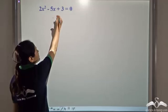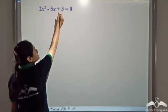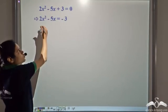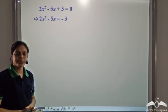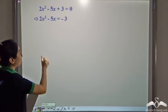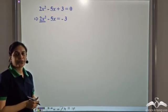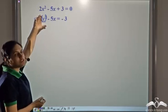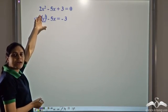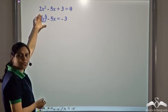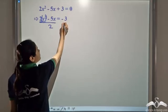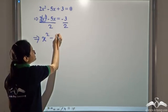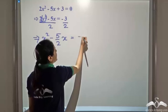We have 2x squared minus 5x plus 3 equal to 0. Let us take the constant term plus 3 to the right hand side, so we get 2x squared minus 5x equal to negative 3. Now the first term is 2x squared — it is not a perfect square, it is 2 into x squared. So if we can get rid of this 2 by dividing both sides by 2, we get x squared minus 5 over 2 times x equal to negative 3 over 2.